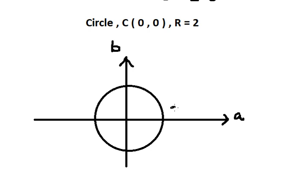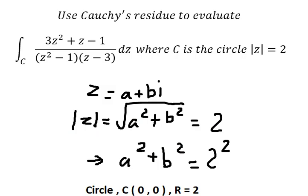So we put number two on the axes, negative two, negative two, and the next one we need to find the poles.